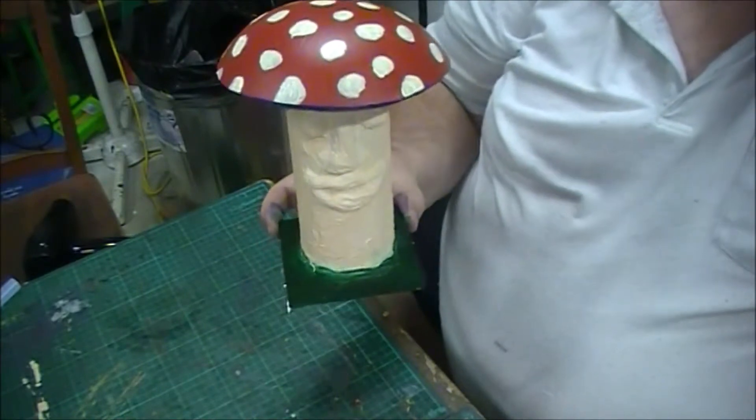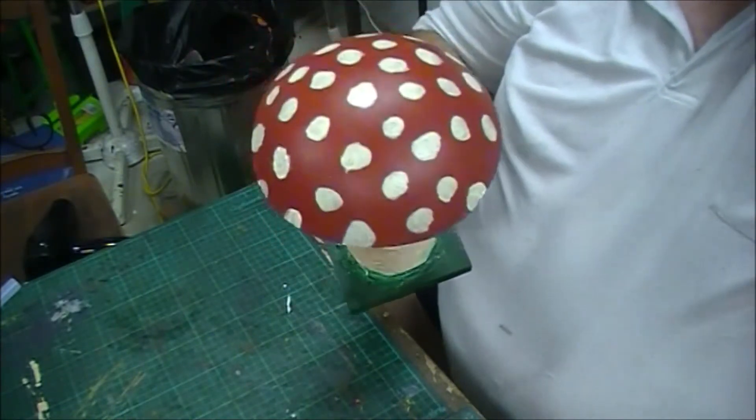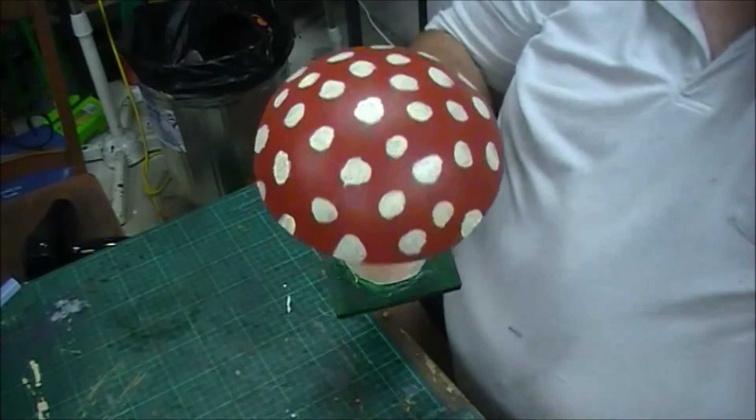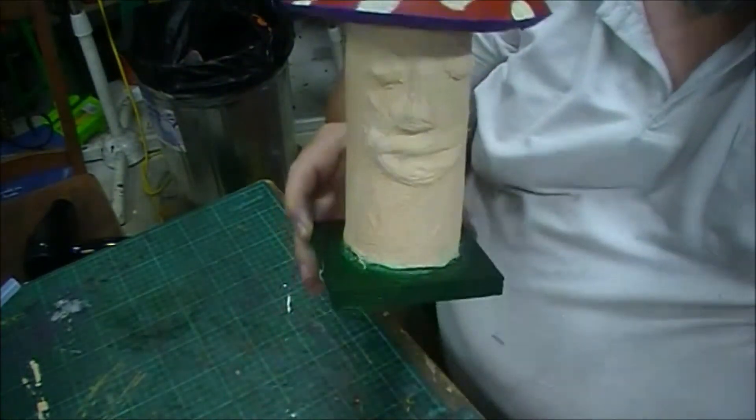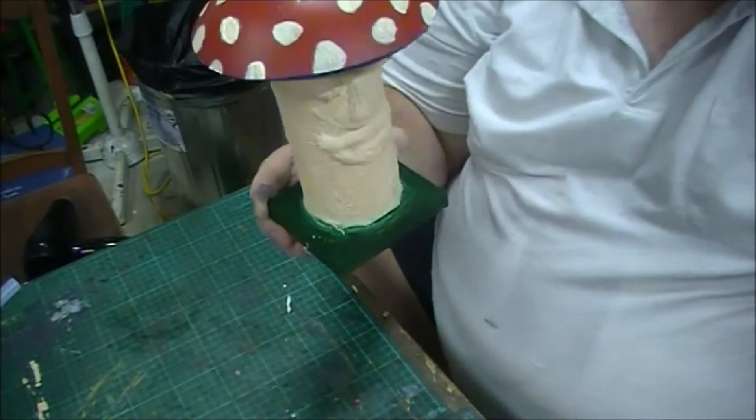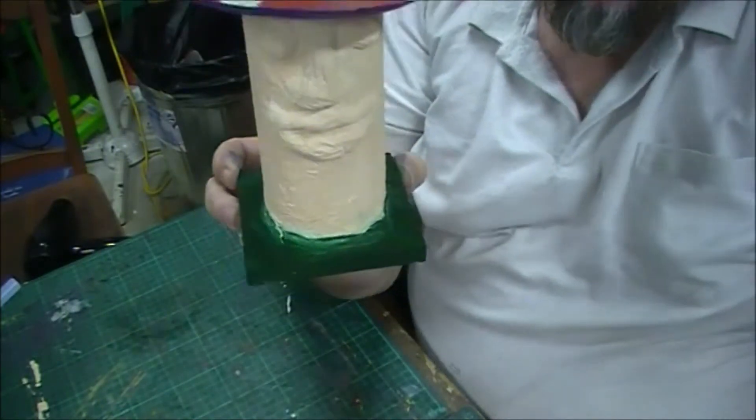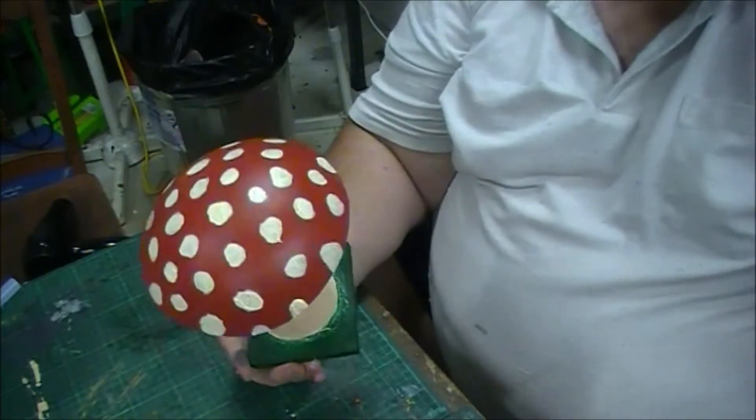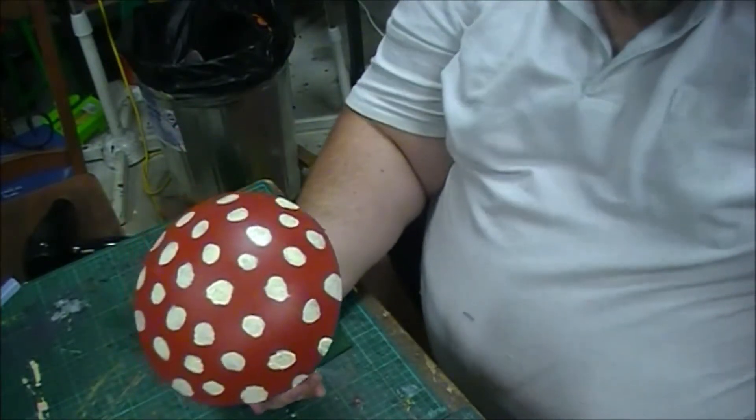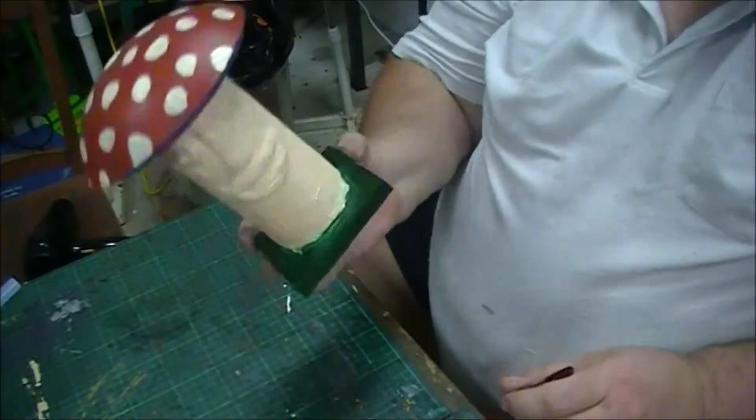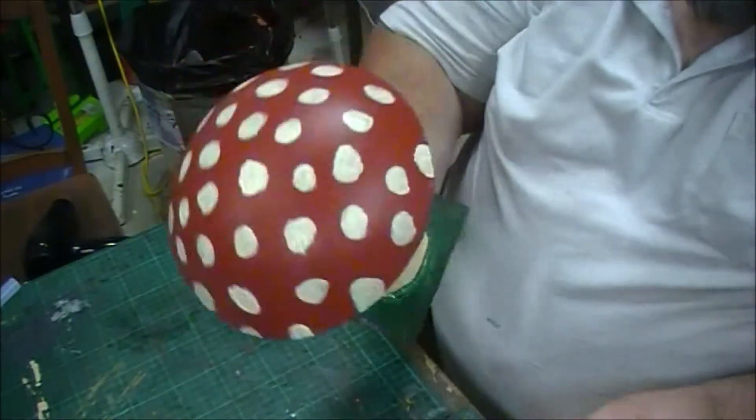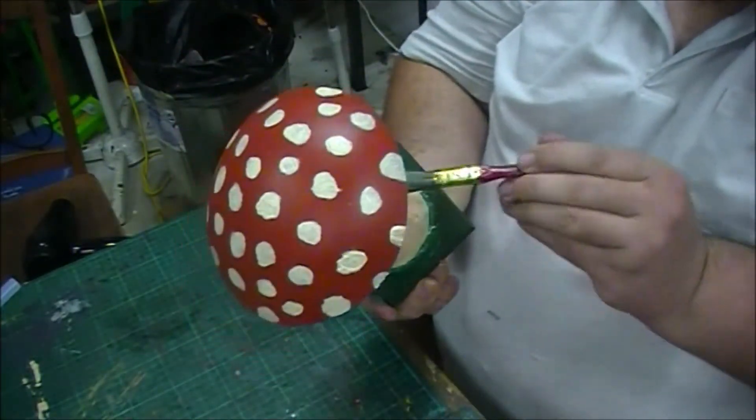Now that you've got to this stage where the mushroom's all painted—the stalk, the cap with the dots, underneath the cap which is a nice purple color, and the base which is green—now it's the most important part of the painting process. We're going to get some very watered down brown paint, talking quarter paint, three quarters water.